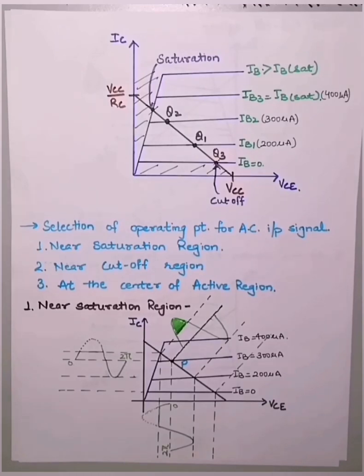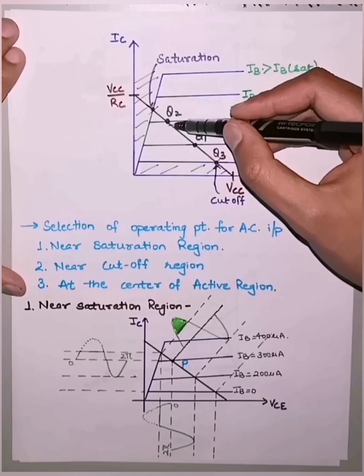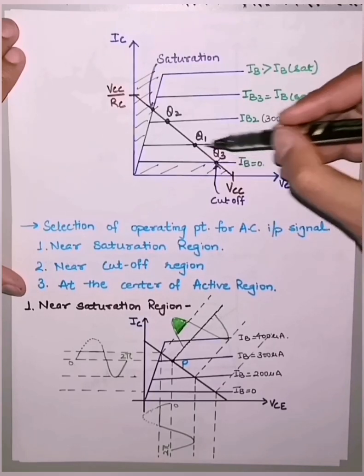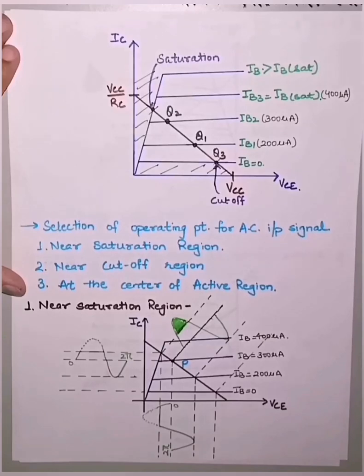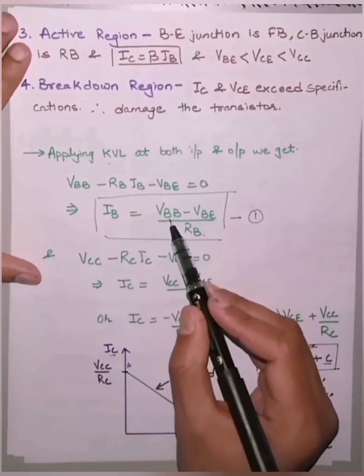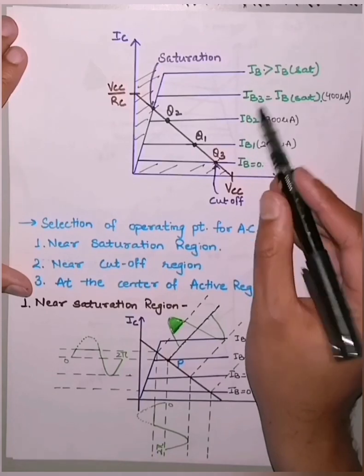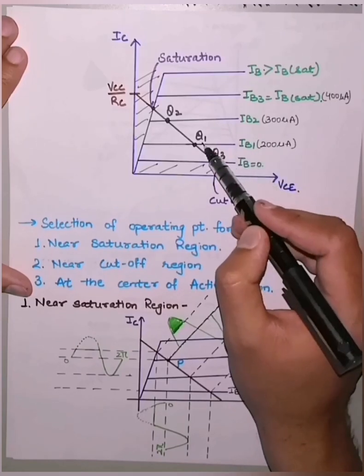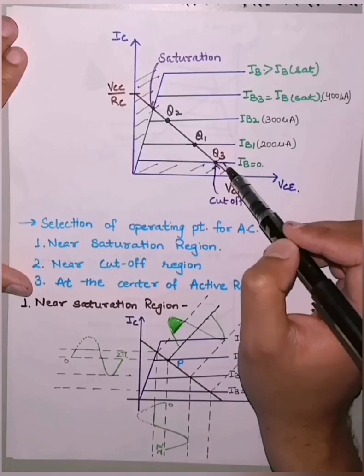The next consideration is the selection of the operating point for an AC input signal. The Q point can be placed anywhere on the DC load line between saturation and cutoff. We select the Q point by choosing different values of VBB — since IB = (VBB − VBE) / RB and VBE, RB are fixed, different VBB values give different IB values. For IB = 200 µA the Q point is Q1, for 300 µA it is Q2, and for less than 200 µA it is Q3.